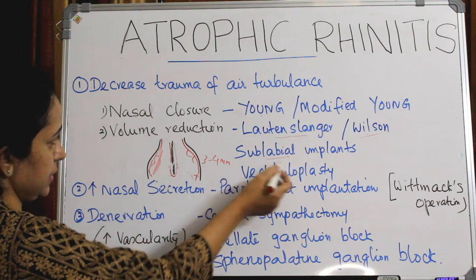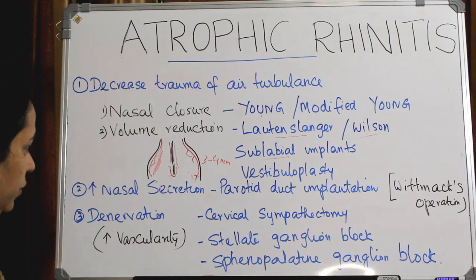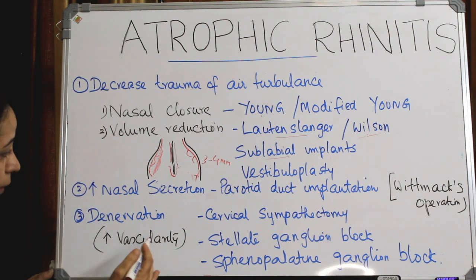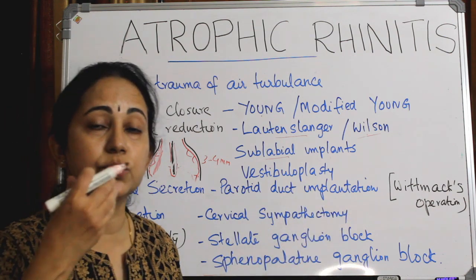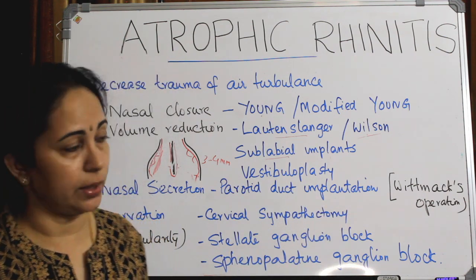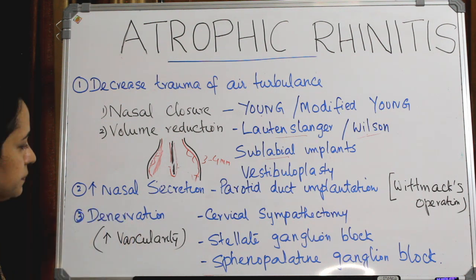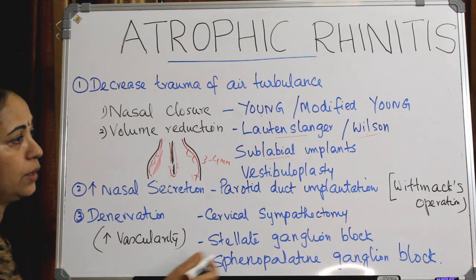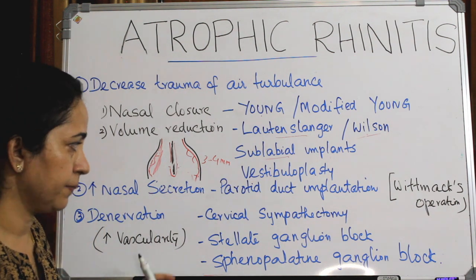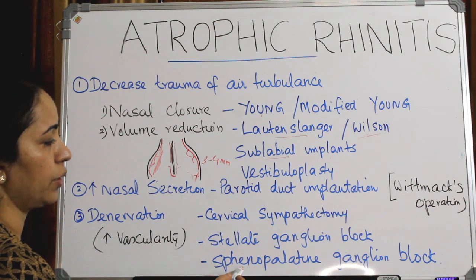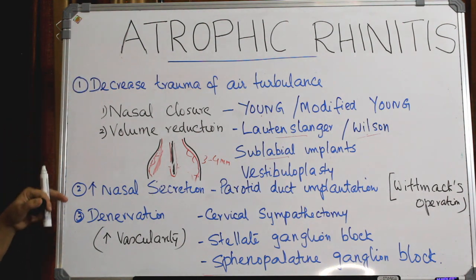All these surgeries are for volume reduction — an important topic as surgical treatment for atrophic rhinitis is commonly asked. Another surgical procedure aims at increasing nasal secretions: the Witmax operation, in which the parotid duct is implanted into the maxillary antrum so nasal secretions drain from the maxillary sinus into the nasal cavity. Denervation surgeries to increase vascularity of the nose include cervical sympathectomy, stellate ganglion block, or sphenopalatine ganglion block.